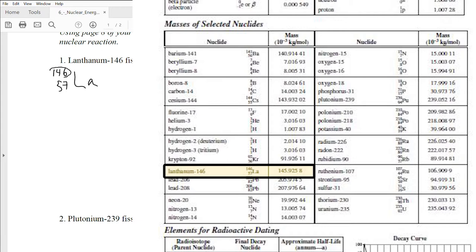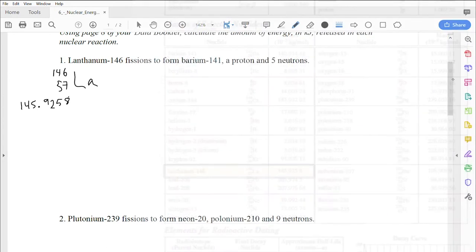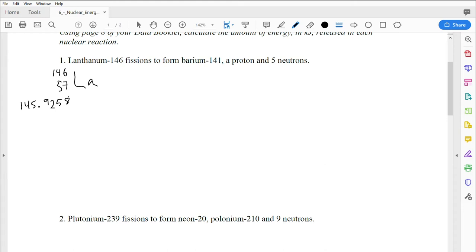Now the 146 here is called the mass number, and this is the protons and the neutrons added together. The bottom number here is called the atomic number, and this is just the number of protons in the element. The other thing is there's a number next to that compound: 145.9258. That's the mass of this compound in 10 to the negative 3 kilograms per mole.